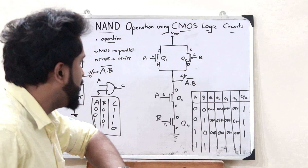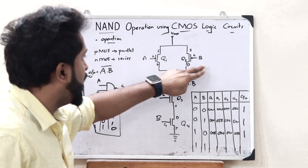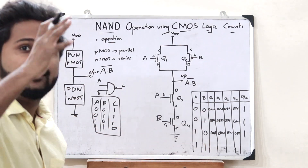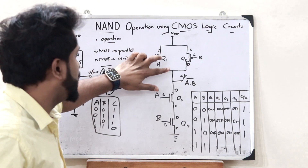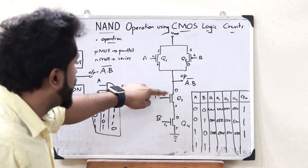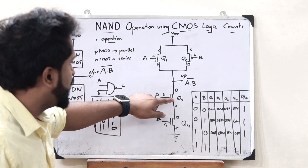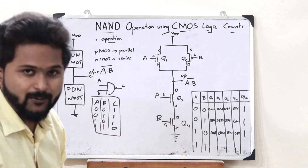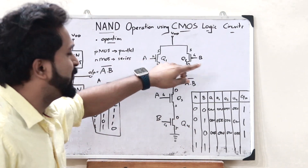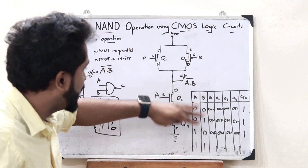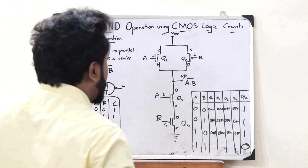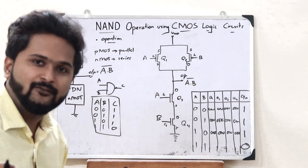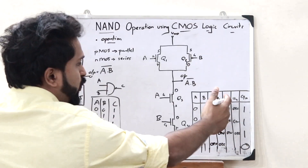Finally, when both A and B are 1: when 1 is given to PMOS transistors, they turn off — no current flows through them, they become open-circuited. In the NMOS side, when 1 is given, both Q3 and Q4 turn on. But since Q1 and Q2 (the PMOS transistors) are off, nothing comes from VDD — the path to output is cut off. Therefore, we get an output of 0. Q1 and Q2 are off, whereas Q3 and Q4 are on.